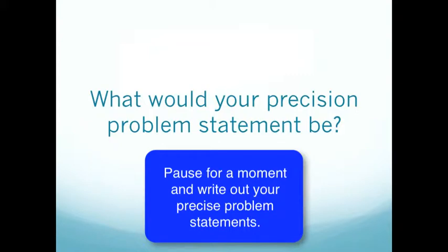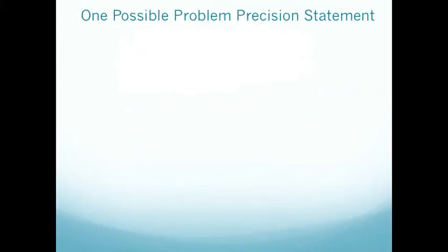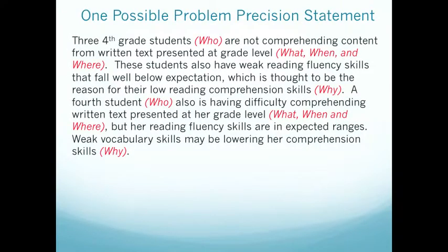Based on these data, what would your precision problem statement be? Here's one possible precision statement derived from our data. This one groups all four students together. We want to make sure we're covering all our precision elements. We're saying that three fourth-grade students are not comprehending content from written text presented at their grade level. These students also have weak reading fluency skills that fall below expectation, and we believe that's why they're faltering in their reading comprehension.